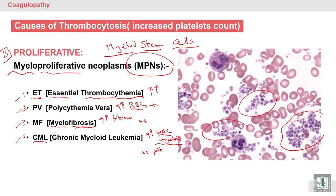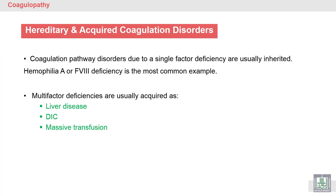As you can see here, there is a collection or aggregation of platelets in the peripheral blood film. We have now finished two types of coagulopathy: vascular and platelet disorders. Next, we will discuss coagulation factor disorders.